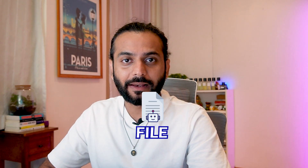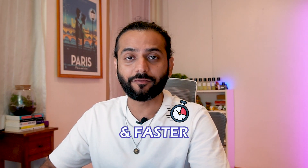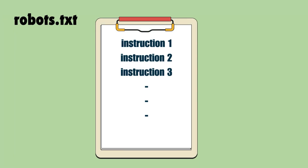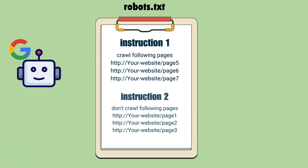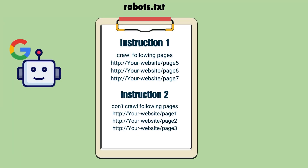A correct robots.txt file helps your website index better and faster on search engines like Google. It also reduces the number of errors in Google Search Console. A robots.txt file is a set of instructions for web crawlers, which are sent by Google to analyze and index your website. With robots.txt, we can instruct these bots which pages they should process and which pages they should leave alone.